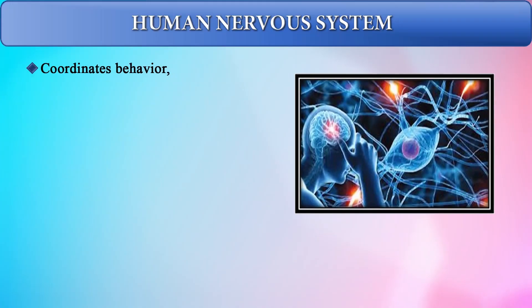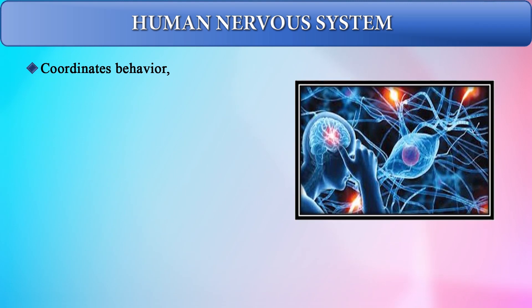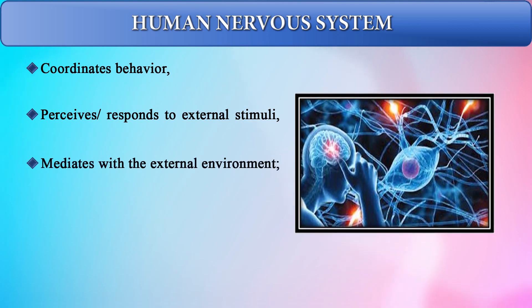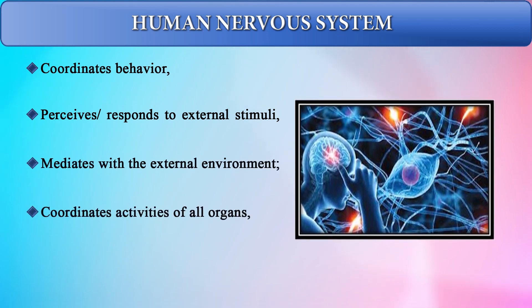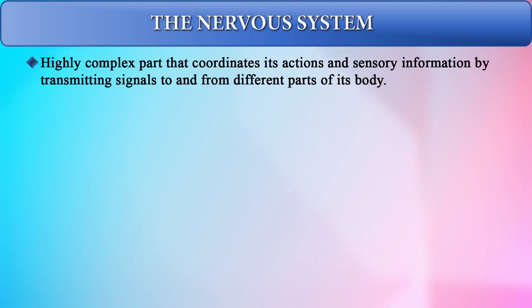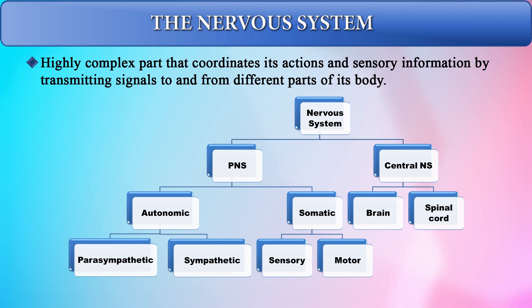Let us first understand about the human nervous system. It coordinates behaviour, perceives and responds to external stimuli, mediates with the external environment, coordinates activities of all the organs, and maintains metabolic balance. The nervous system is a highly complex part of the human body and it coordinates actions and sensory information by transmitting signals to and from different parts of the body. It can be classified into the peripheral nervous system and the central nervous system.